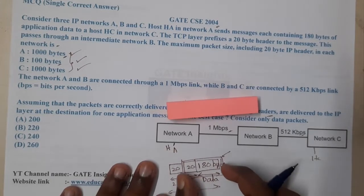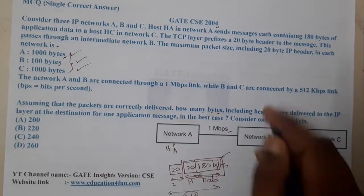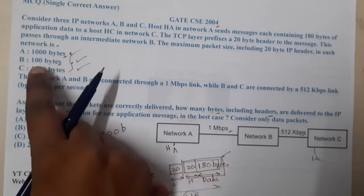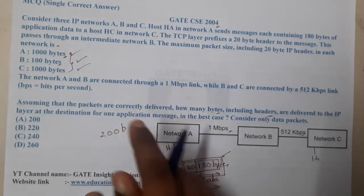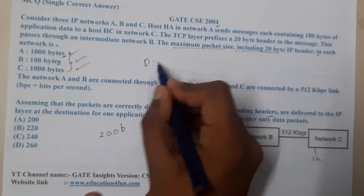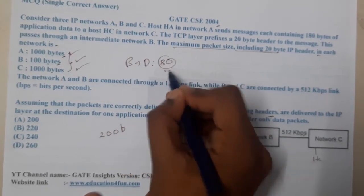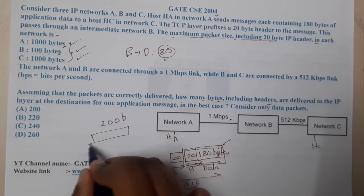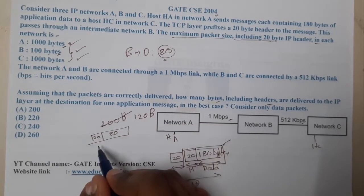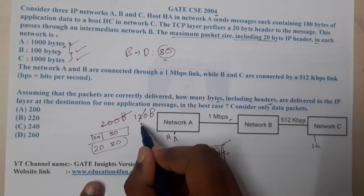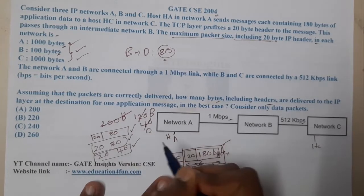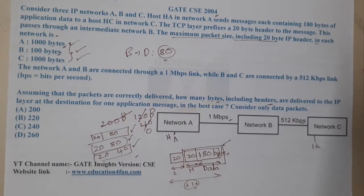Our total data is 200 bytes and we need to fit it into 100-byte packets for network B. Since the 100 bytes includes the 20-byte header, only 80 bytes of data can go per packet. First packet: 20-byte header + 80 bytes data, leaving 120 bytes. Second packet: 20-byte header + 80 bytes data, leaving 40 bytes. Third packet: 20-byte header + 40 bytes data, leaving zero. So with three packets we can send all the data.